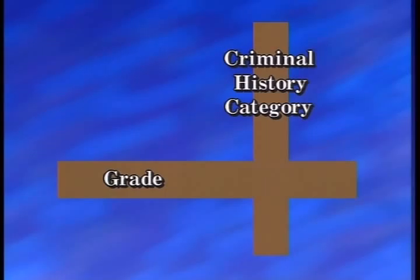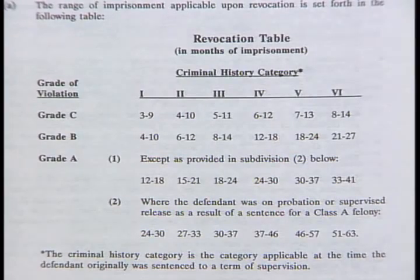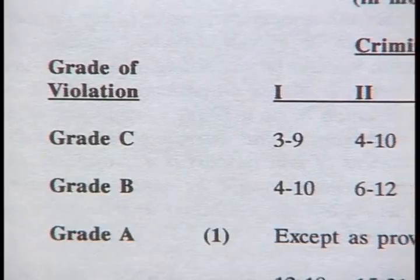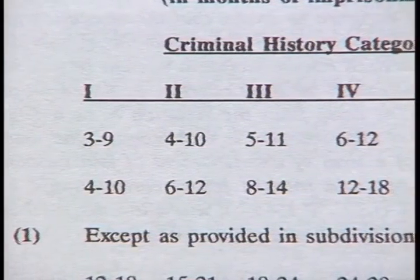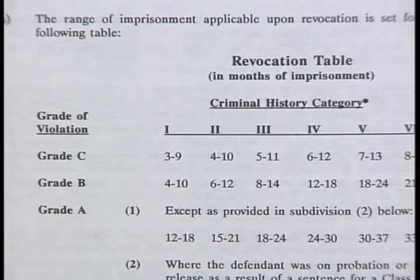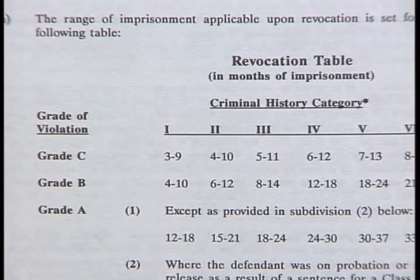The Commission's policy statements establish three broad grades of violations, which permit proportionally longer prison terms for more serious violations. For example, any violation involving a firearm listed under the National Firearms Act, such as a machine gun or a sawed-off shotgun, is a Grade A violation. The grade of the violation, together with the violator's criminal history category as calculated at the time of initial sentencing, fixes the suggested sentencing range. Absent a departure, the court's sentence upon revocation may be set at any point within the applicable range set forth in the Commission's revocation table, provided there is no conflict with maximum or minimum terms of imprisonment required to be imposed by statute upon revocation.